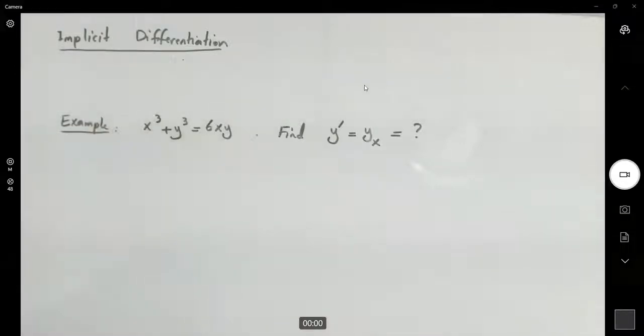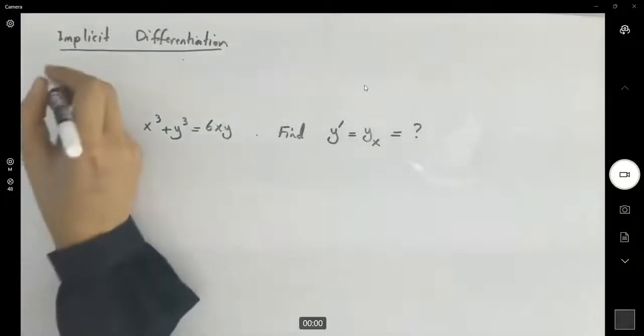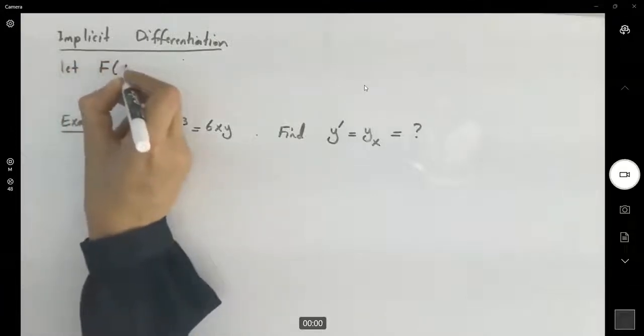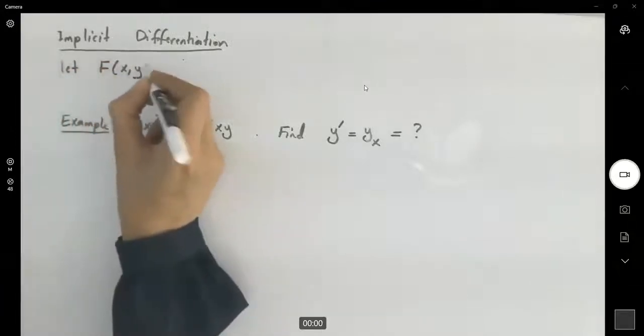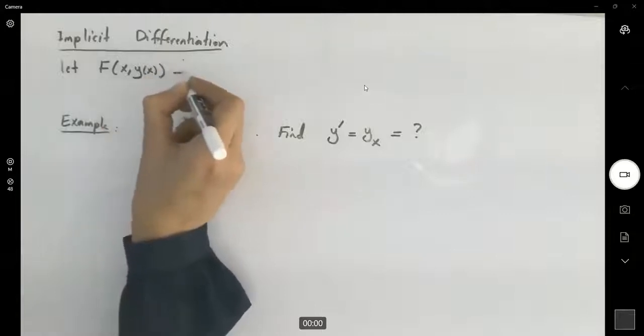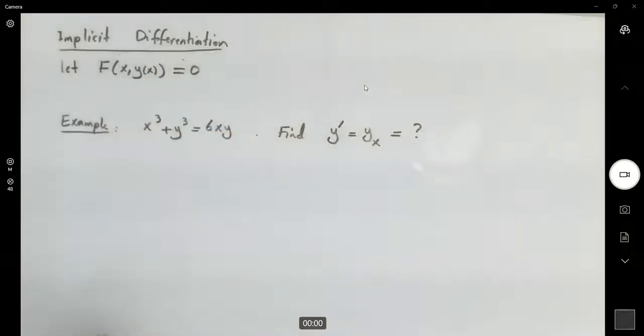This formula says, suppose you have a relation between x and y. Let F(x,y), where y is also a function of x, so we write it as y(x), or F(x,y) = 0.